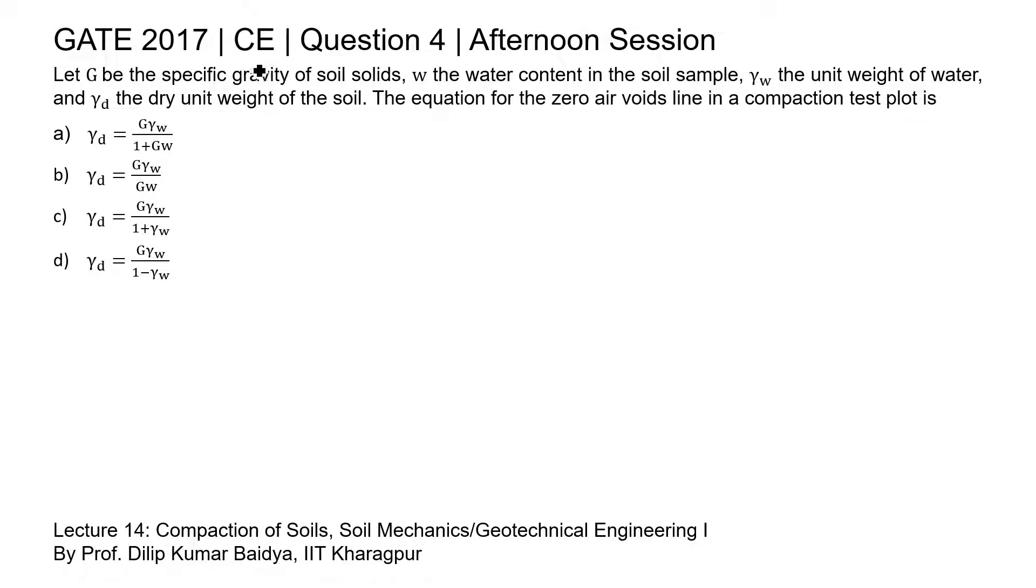This is question 4 of Civil Engineering paper of GATE 2017 afternoon session. Let G be the specific gravity of soil solids, W the water content in the soil sample, gamma W the unit weight of water, and gamma D the dry unit weight of the soil. The equation for the zero air void line in a compaction test plot is...